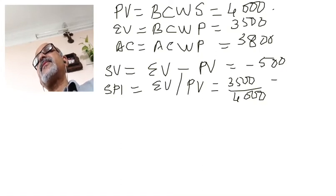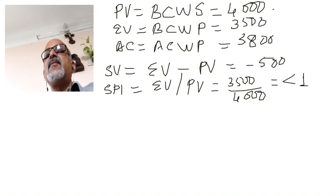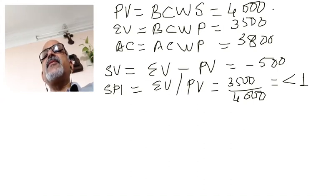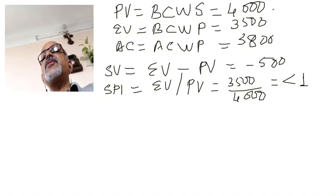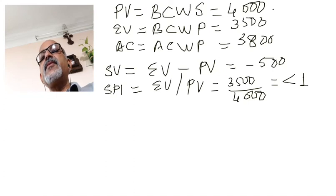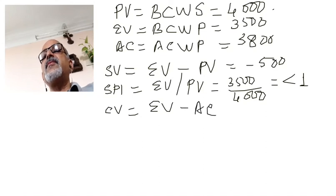Anything less than one for SPI indicates a schedule variance. If SPI equals one, earned value and plan value are the same, meaning the project is right on target. If SPI is greater than one, earned value is more than the plan value, meaning the project is ahead of schedule.